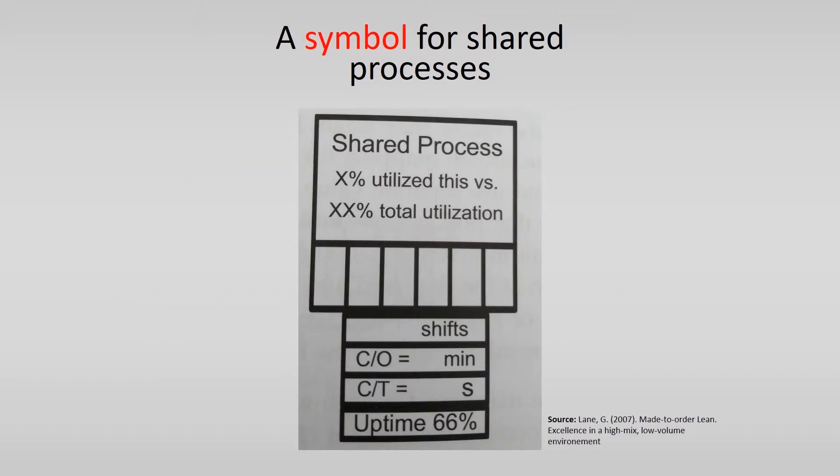When you start drawing the current state of the value stream map, there is a specific symbol that can be used for low-volume environments. It is the symbol for shared processes, you see over here. This symbol is especially useful for low-volume operations, since you often have a process or machine that is shared among different products.